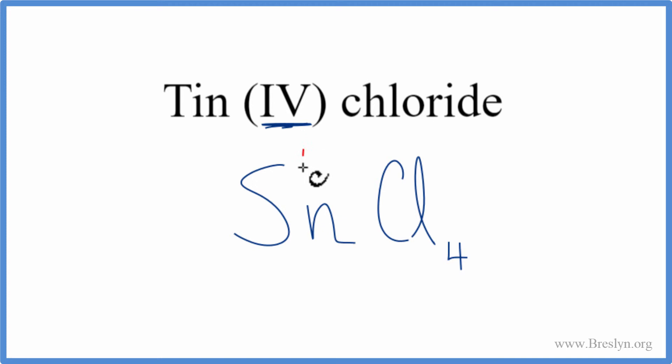Tin, we said, was 4+, and chlorine, we said, was 1-. So I have four chlorine atoms. Each one's 1-. 4 times 1-, that gives us a 4-. 1 tin times the 4+, 4+. So 4+ and 4-, that adds up to 0. We have a net charge of 0.